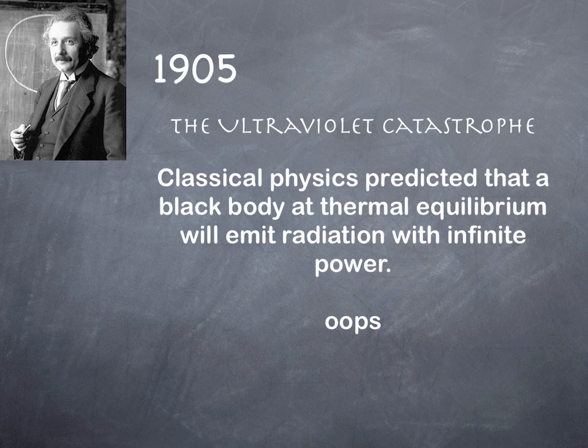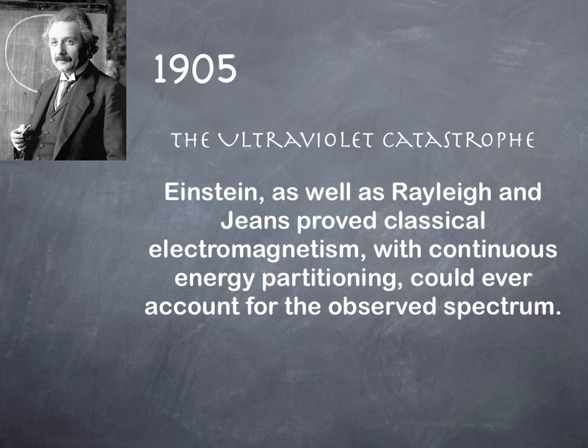Come along 1905 — Einstein got into the business, working as a patent clerk at the time, where most of his great science seems to have come from. He solved the problem of the ultraviolet catastrophe. The ultraviolet catastrophe was a prediction in classical physics that a black body at thermal equilibrium will emit radiation with infinite power — and they knew that wasn't right. Einstein demonstrated that classical electromagnetism, with continuous energy partitioning, could never account for the observed spectrum.